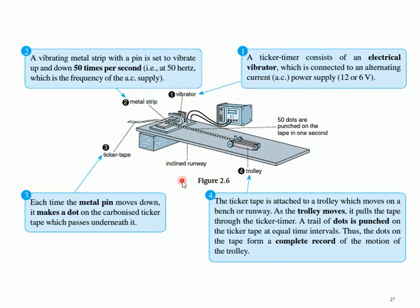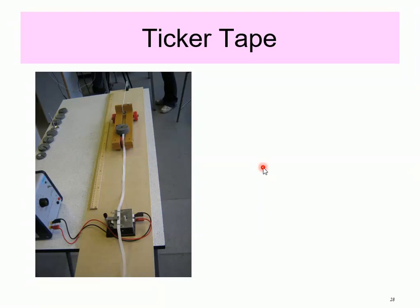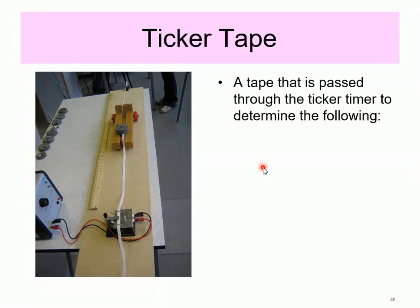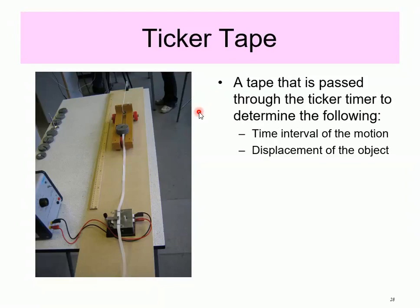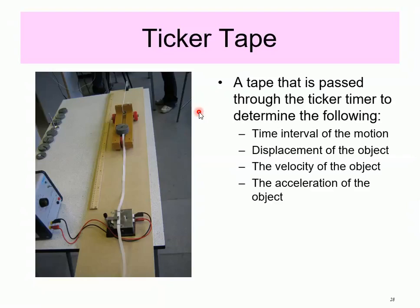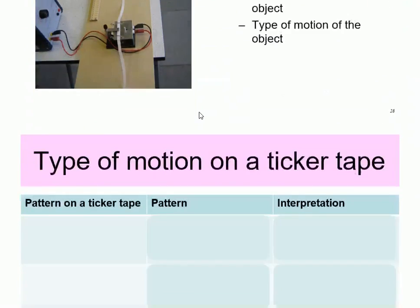Normally in experiments, this is the diagram that we draw: power supply connected to the Ticker Timer, and we have a Ticker Tape that is actually connected to the trolley on an inclined runway. Further discussion about Ticker Tape — it's a tape that passes through the Ticker Timer to determine the following. We use Ticker Tape to determine: Number 1, the time interval of motion; Number 2, displacement of the object; Number 3, the velocity of the object; Number 4, the acceleration of the object; and finally, the type of motion of the object. We can actually find these things through the Ticker Tape.